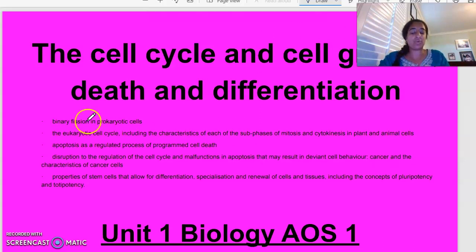In terms of the dot points, we'll be looking at binary fission in prokaryotic cells, the eukaryotic cell cycle, looking at the phases of mitosis and cytokinesis in plant and animal cells, what apoptosis is and how that process is regulated, and then what can happen in terms of malfunctions of apoptosis. And then looking at the last component, which is stem cells, allowing for differentiation and renewal.